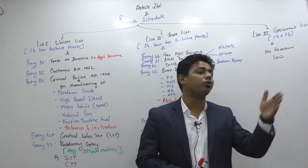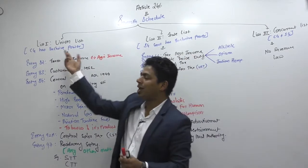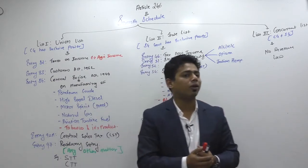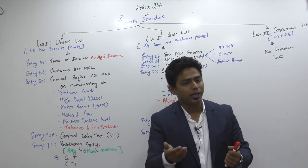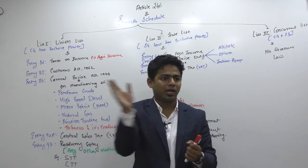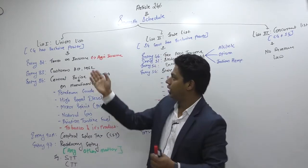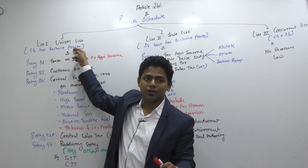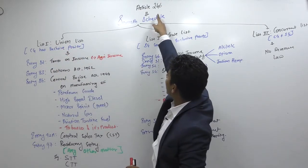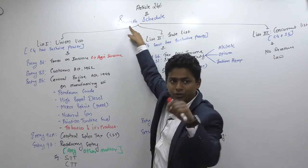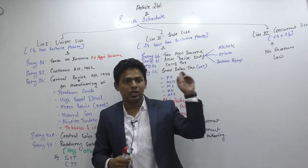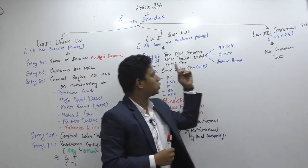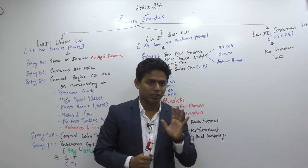So who is authorised to make which types of law? Article 246 has a 7th Schedule. The 7th Schedule has 3 lists: List 1, List 2, and List 3. List 1 has the name Union List, List 2 has the name State List, and List 3 has the name Concurrent List.